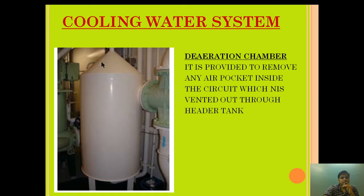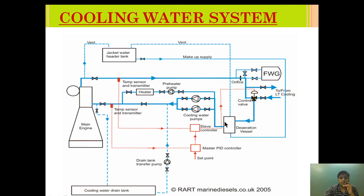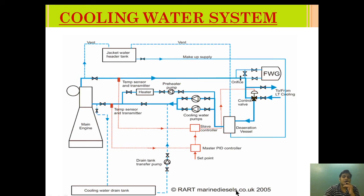The de-aeration chamber is a dome-shaped fitting provided just before the pump inlet so that any air pockets in the system can be removed, preventing cavitation. The main purpose of de-aeration is to vent any air pockets out through the header tank. As the temperature of liquid increases, the chances of vapour formation and cavitation also increase, so de-aeration vessels ensure that any air pockets formed are vented out.